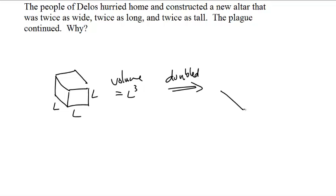And then it became twice as wide, twice as tall, L, and twice as long, 2L, 2L, 2L. What happened?